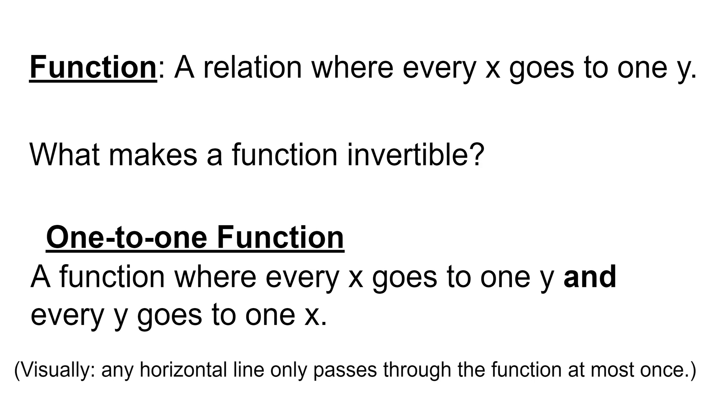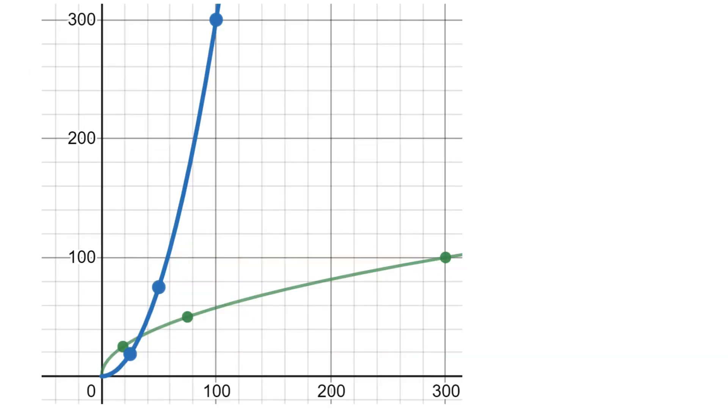Visually, the way we can tell that something is a one-to-one function is the horizontal line test that I mentioned, which says any horizontal line only passes through the function at most once. So as you can see, when we restrict the domain, now it becomes an invertible function on the restricted domain because any horizontal line I draw is only passing through our original d function one time. And that's why we're allowed to create the s of d function as its inverse.